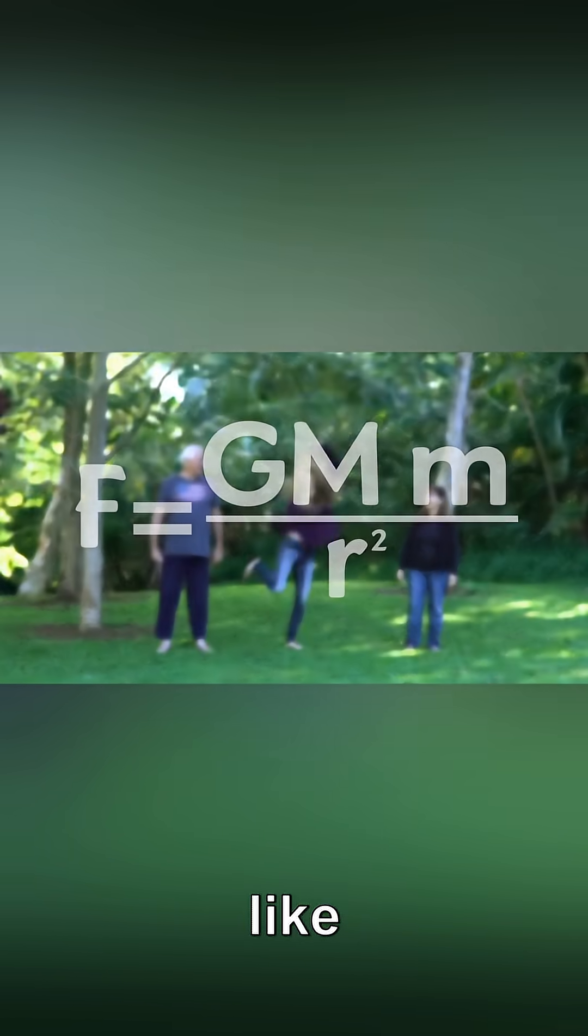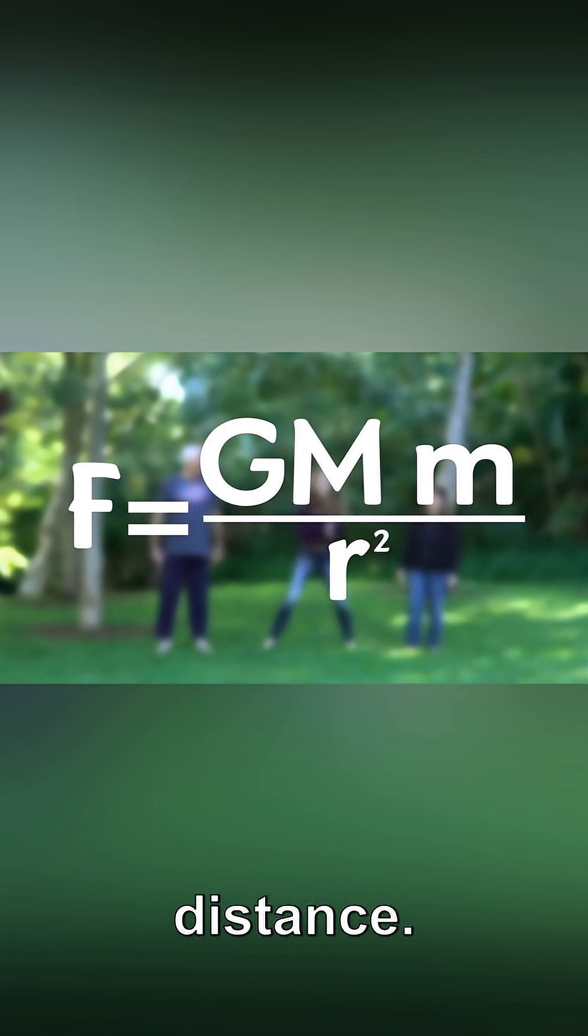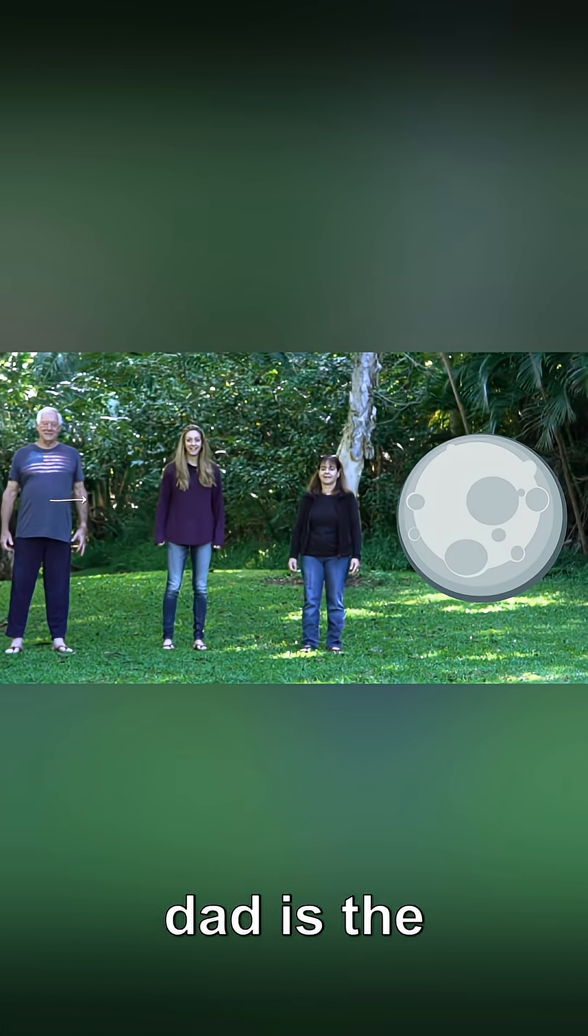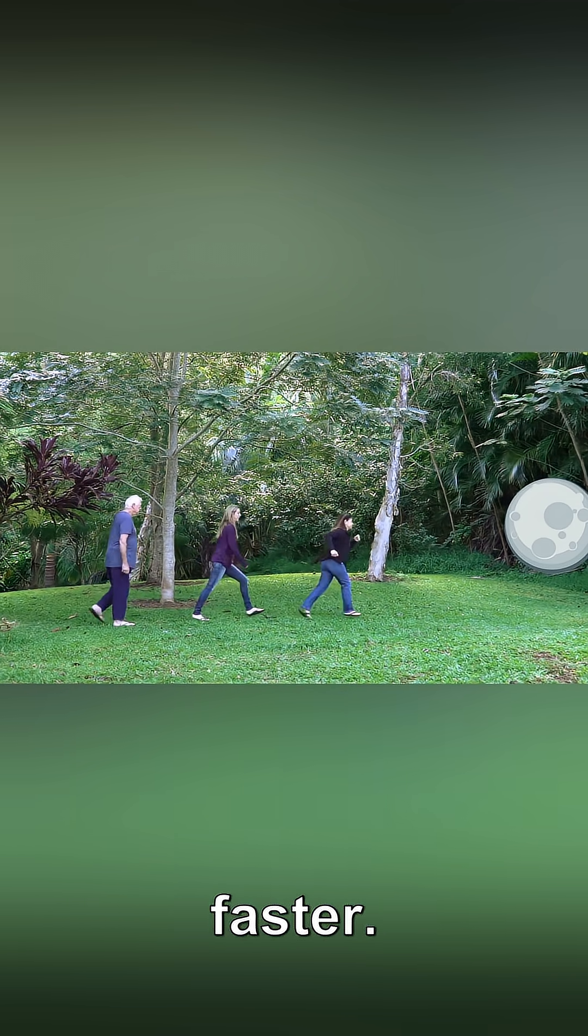Gravitational forces, like magnetic forces, depend on distance. The further away from the moon, the weaker the force will be. So the force on dad is the weakest, the force on me is meh, and the force on mom is the strongest. As time passes, mom will reach the moon much faster.